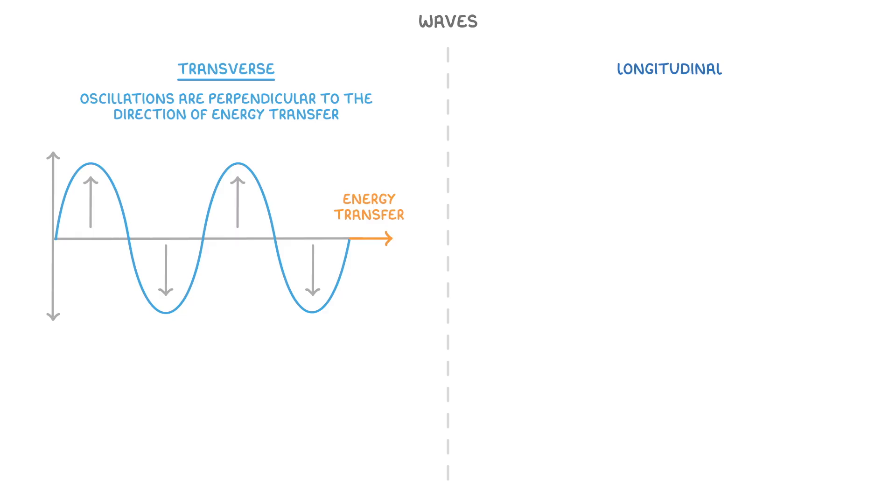Most waves we can think of are transverse, including all electromagnetic waves, like light and radio waves, ripples and waves in water, and the waves of strings like on a guitar.